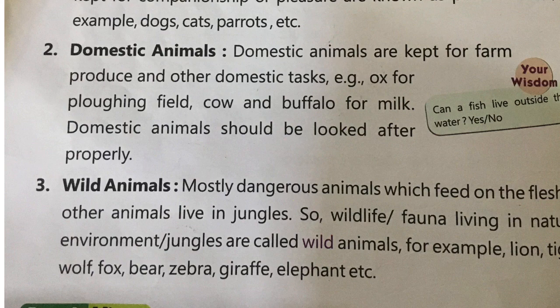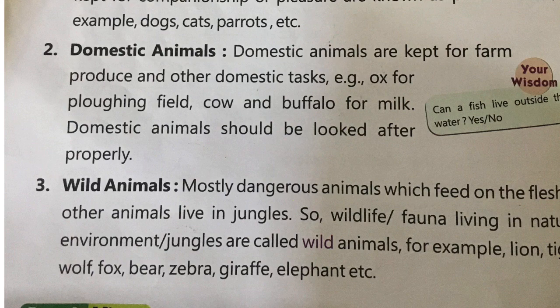Wild animals. Mostly dangerous animals which feed on the flesh of other animals live in jungles. Wildlife or fauna living in natural environments or jungles are called wild animals. For examples: lion, tiger, wolf, fox, bear, zebra, giraffe, elephants etc. Animals which we find in the jungle are known as wild animals. These animals are dangerous and can also harm us because they eat the flesh of another animal. That is why these animals are kept in the jungle, and they are known as wild animals.